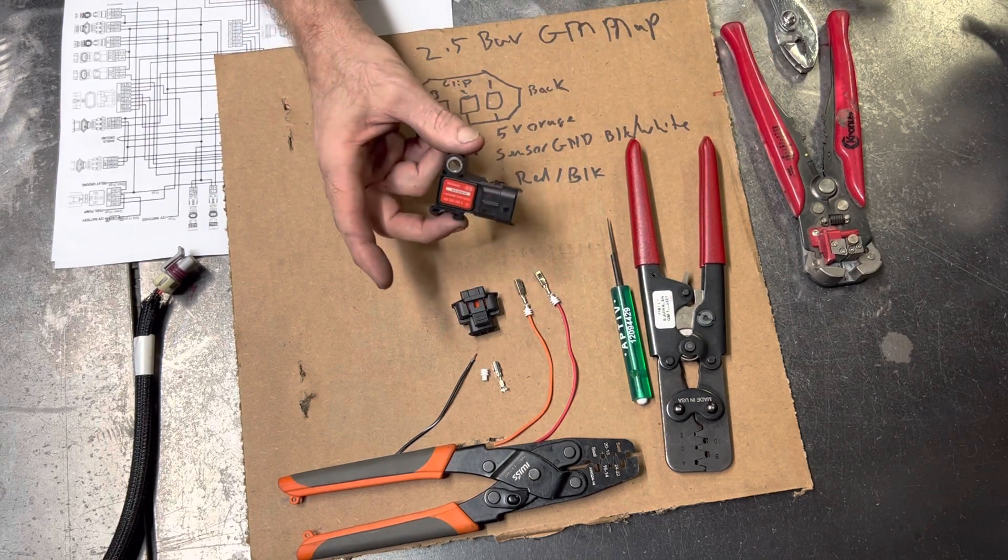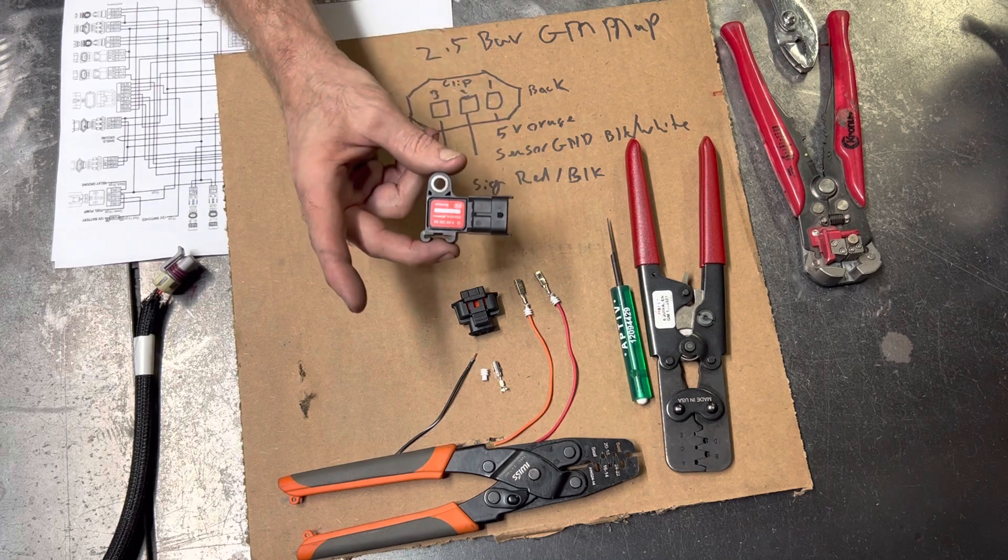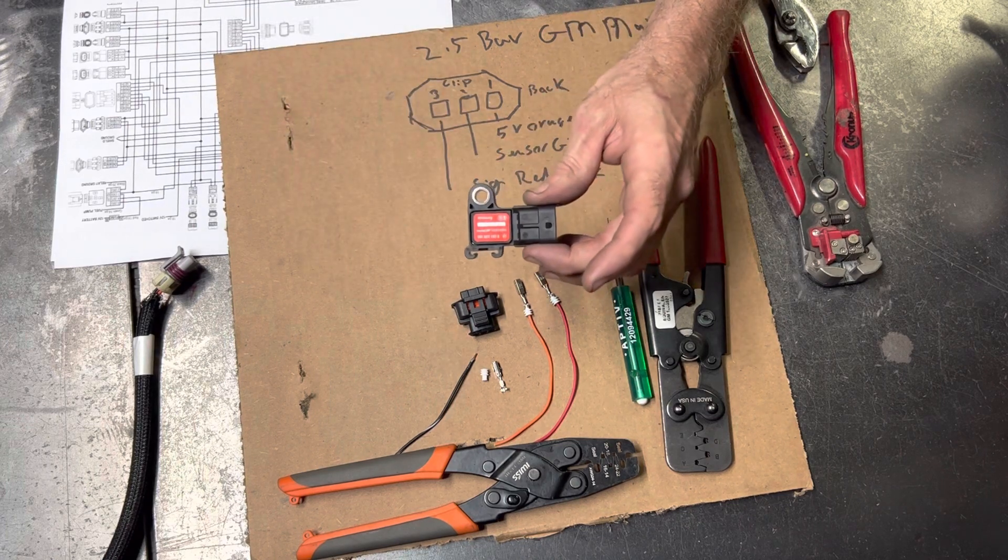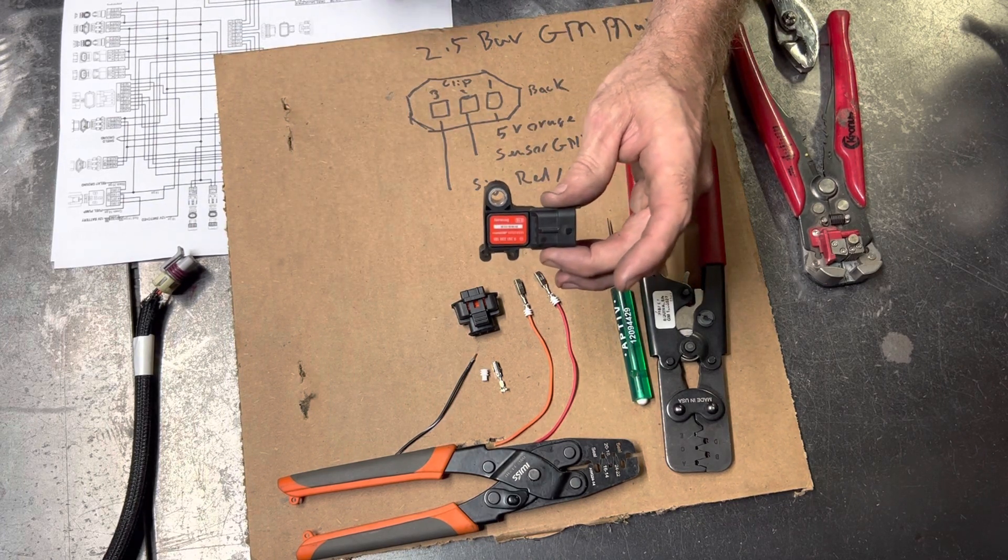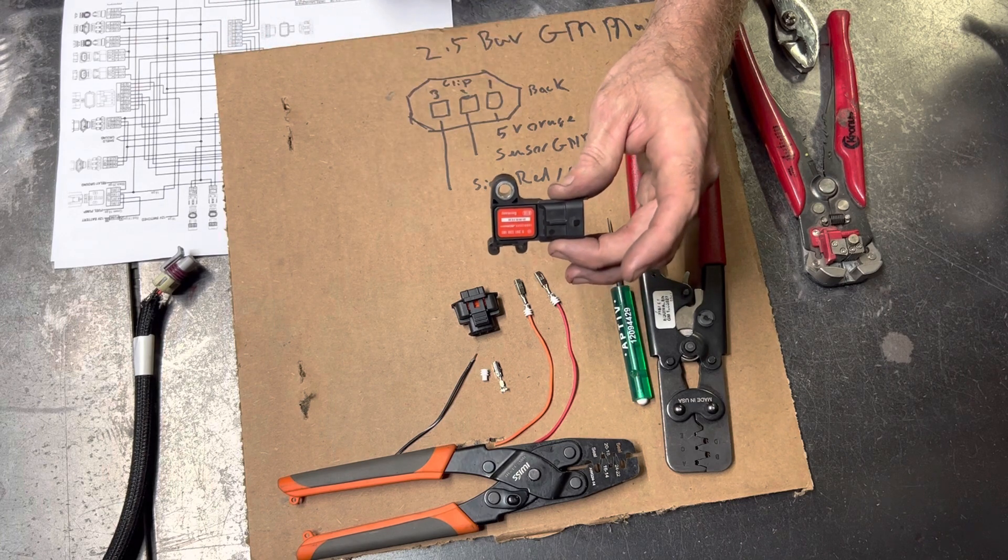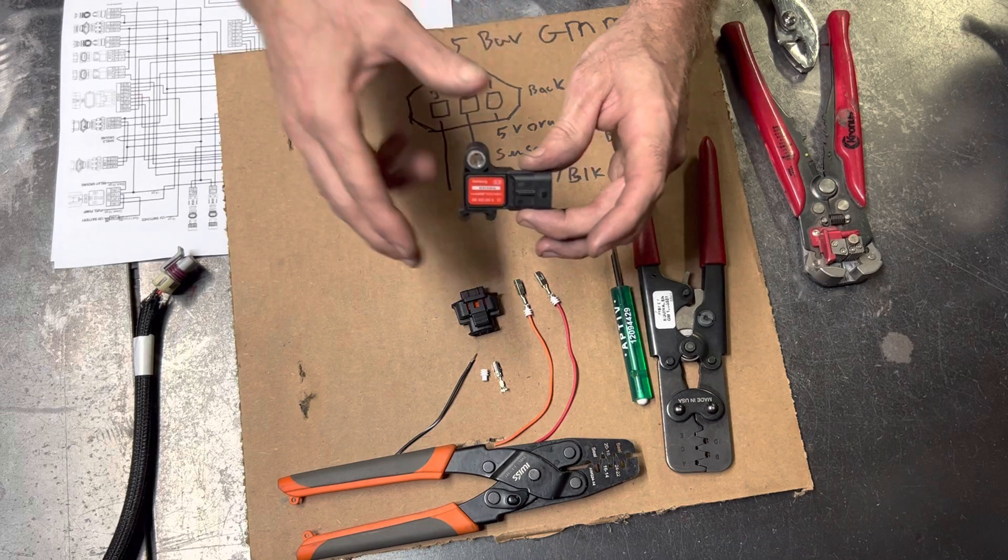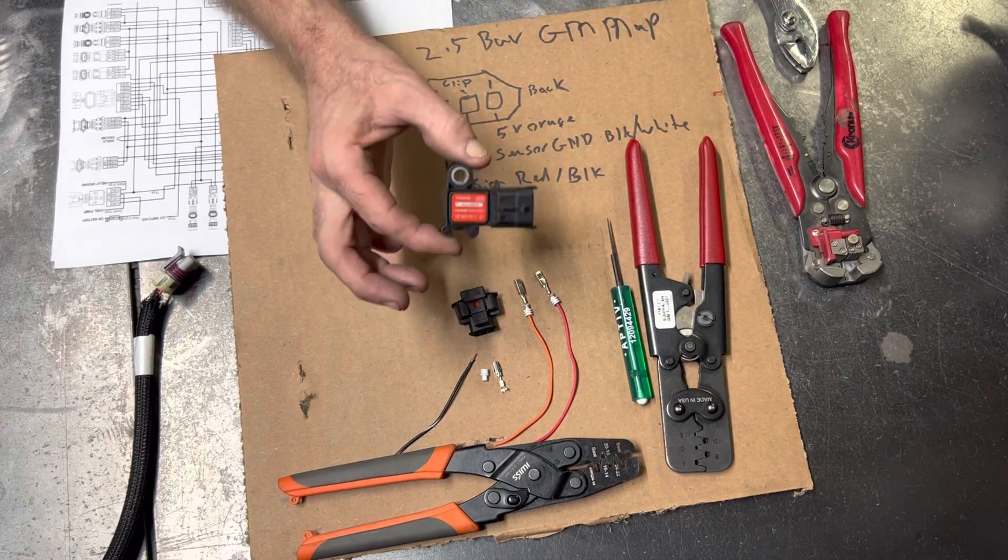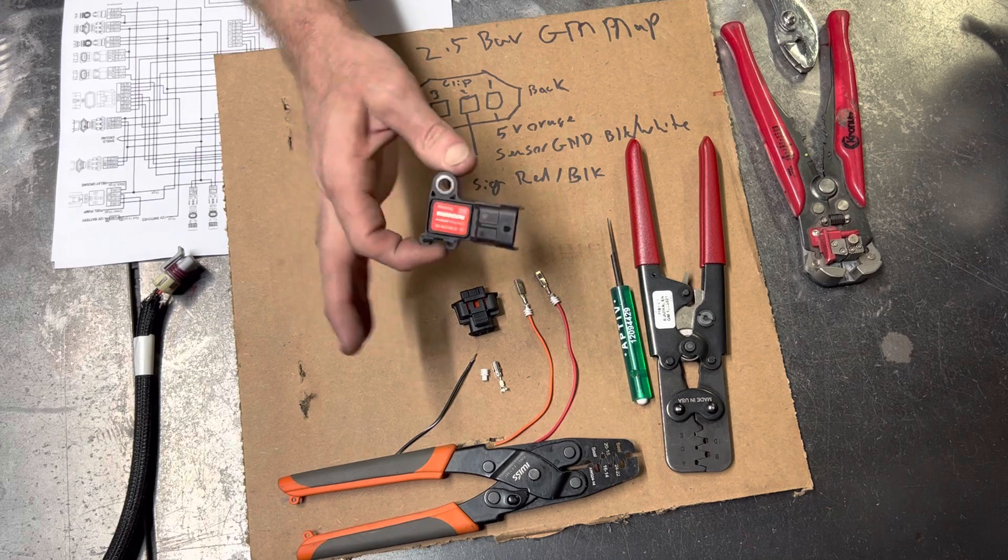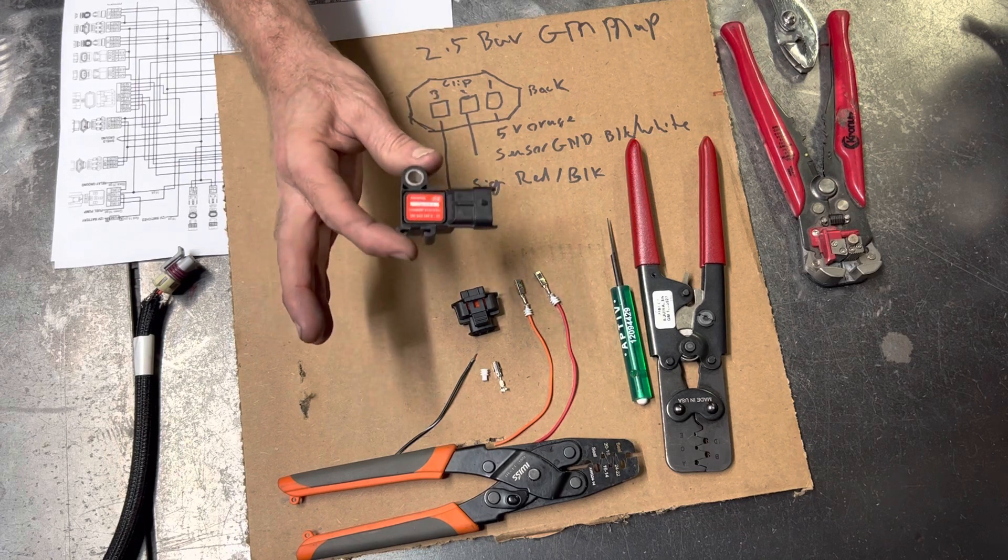I like these 2.5 bar GM sensors because they're just right in the Holley drop-down menu. You just click on them. All you have to do after that is go and make sure that you've scaled your timing map and your fuel maps appropriately once you've changed the scaling on there.